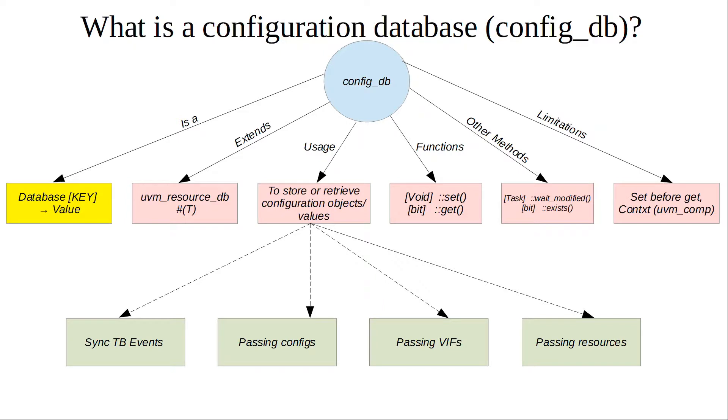This can lead to a black box testbench where the test writer can retrieve the appropriate sequencer from the config DB in the top level sequence or test, and they don't really need to know the exact details of the testbench. So those are some use cases for config DB.